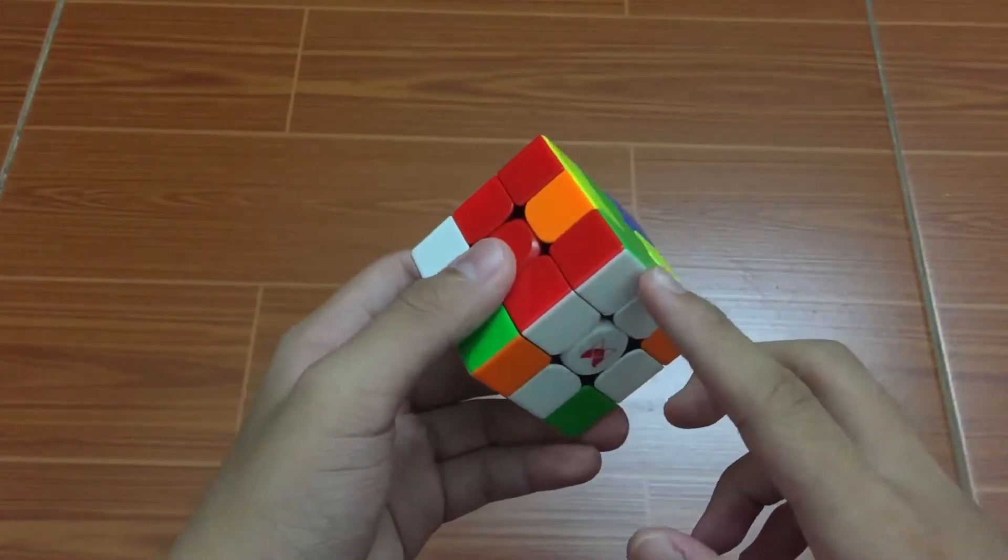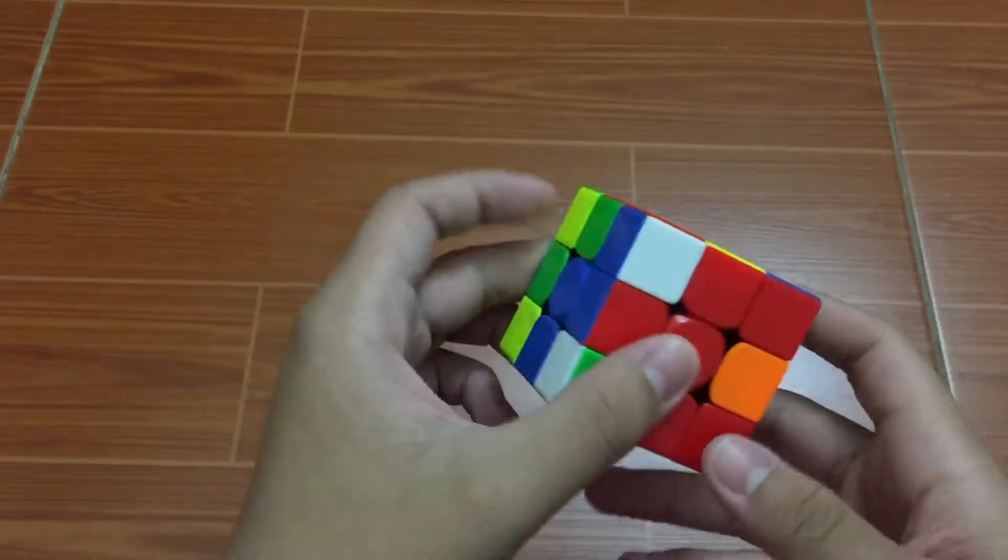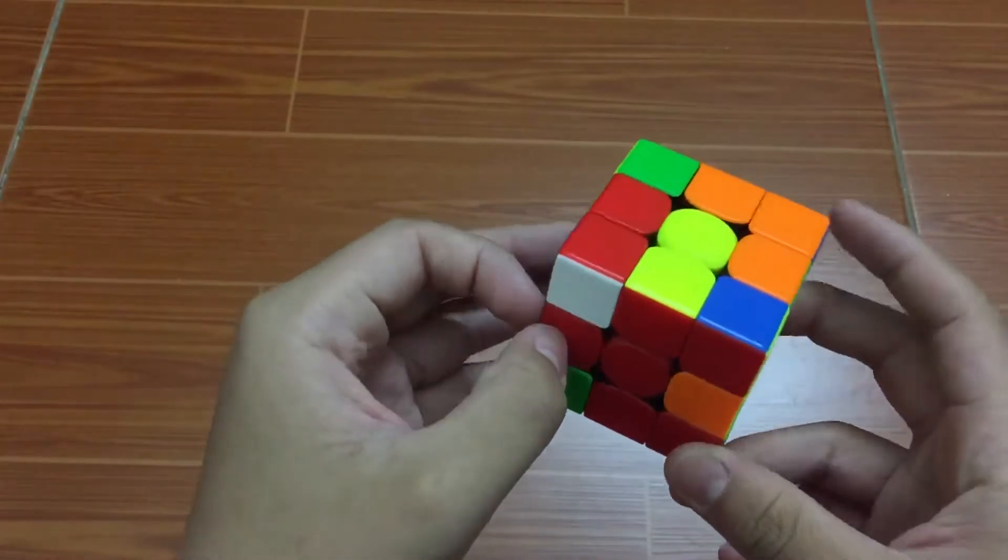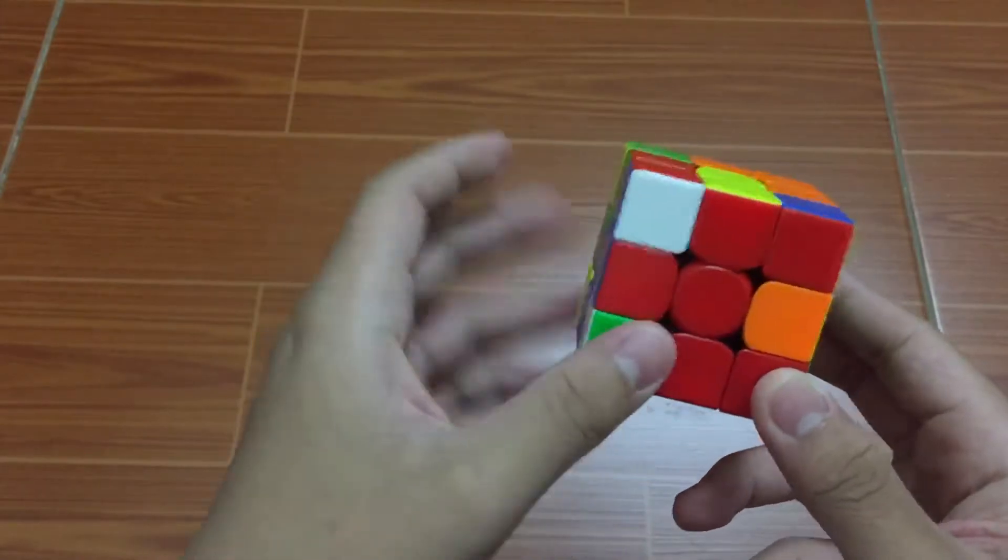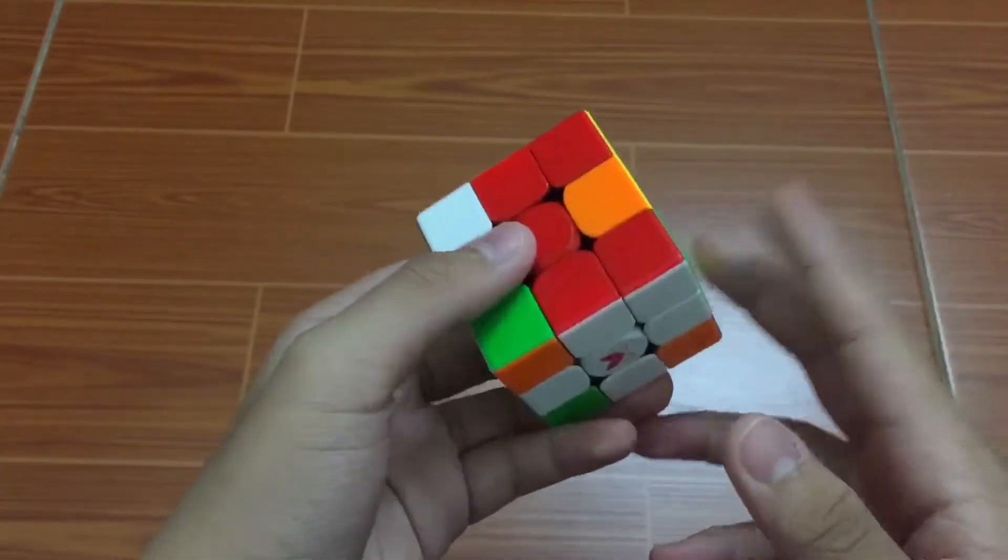So if you have one corner piece done and one edge piece done, they can be diagonal, they can be next to each other, but they need to be in different slots.